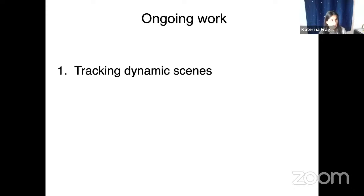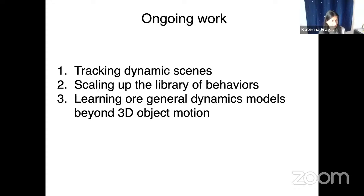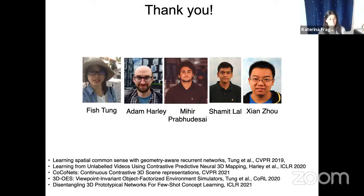These are some preliminary thoughts. We're still figuring out the right way to do permanence — how I see a keyboard from one viewpoint and see the full keyboard in my mind. How do we handle dynamic scenes and occlusions? How do we scale up the library of behaviors for manipulation, learn general dynamics beyond pushing, and have an open language vocabulary? All the work described was done by my students Fish, Adam, Mihir, Shamit, and Ziam. Thank you very much and I look forward to your questions.